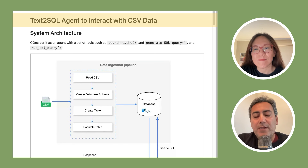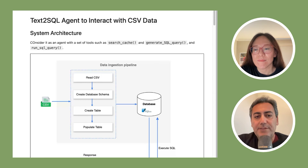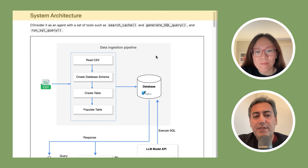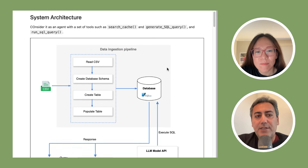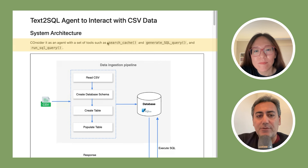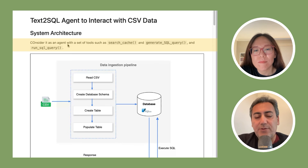This is for use cases where we have one CSV file, though it works with multiple files too — the solution will be a bit more complex with a couple of extra steps. So this is the architecture I created. It's essentially an agent because we have a set of tools — for example, to search through cache, to generate a SQL query, or to run a SQL query. These are the actions or tools the agent needs to execute.